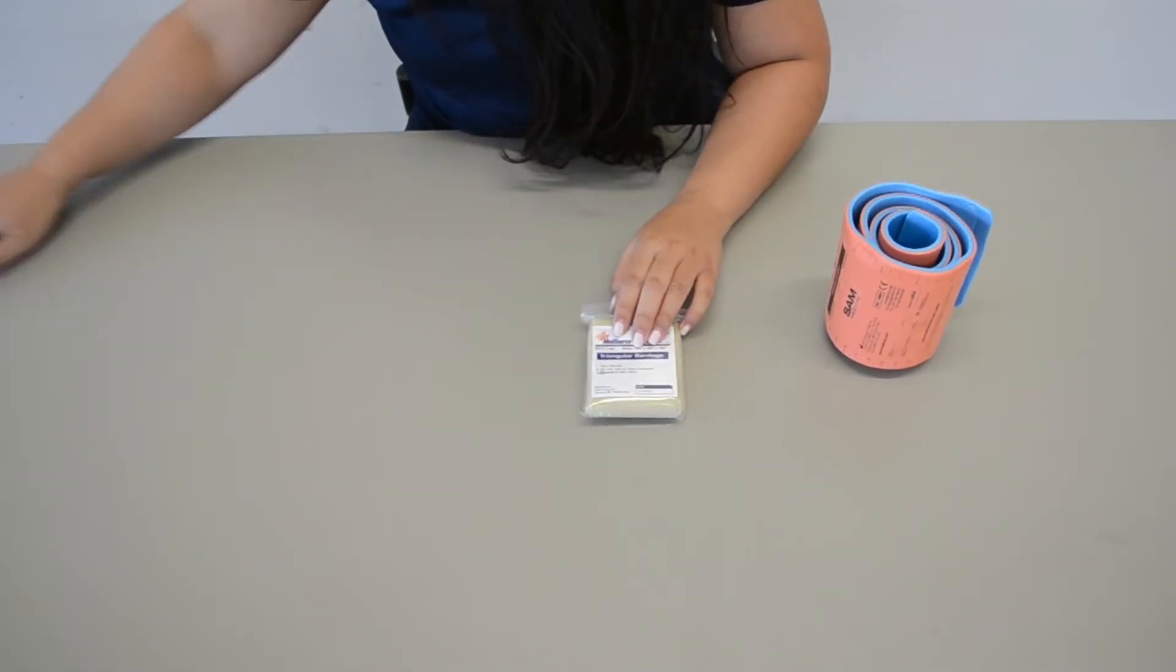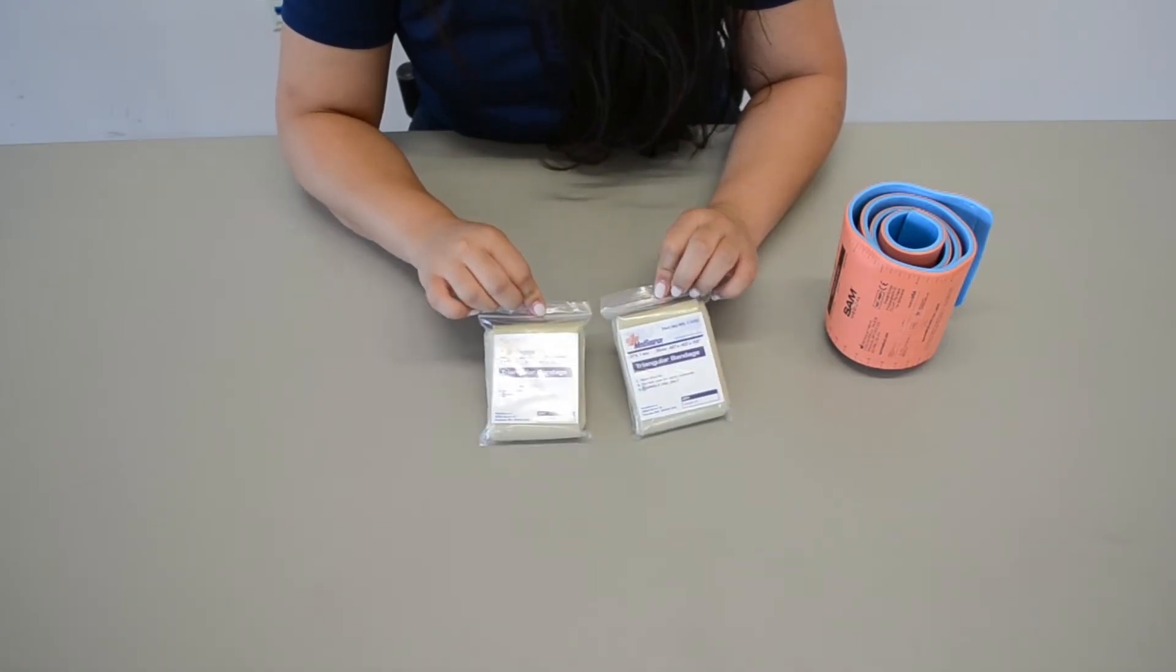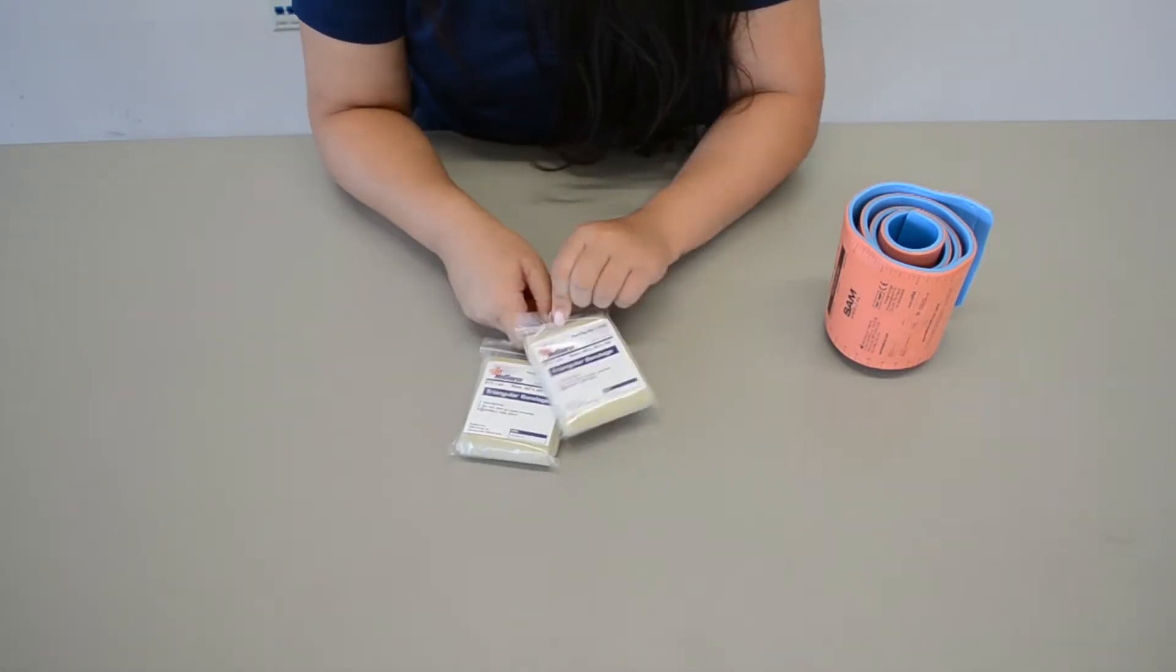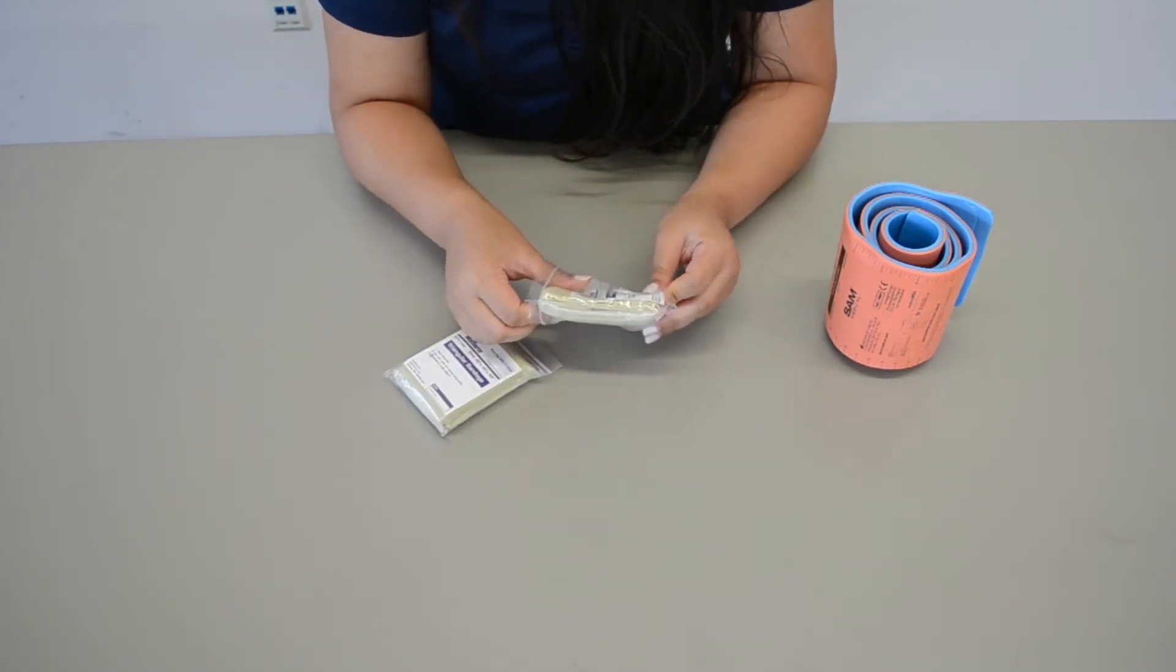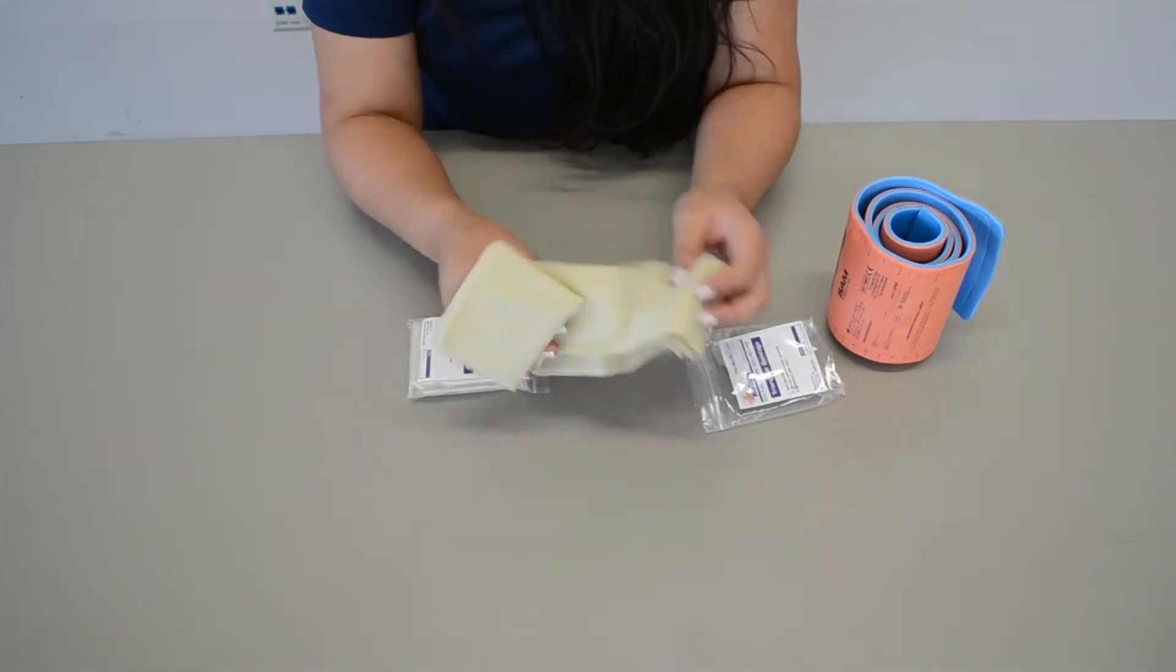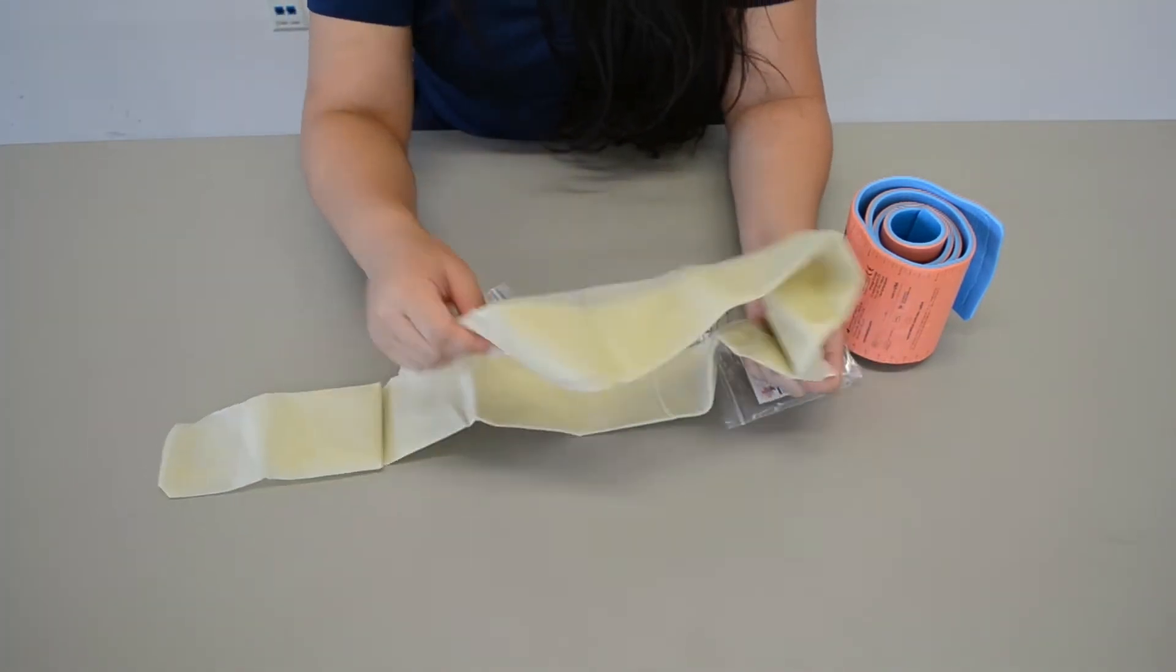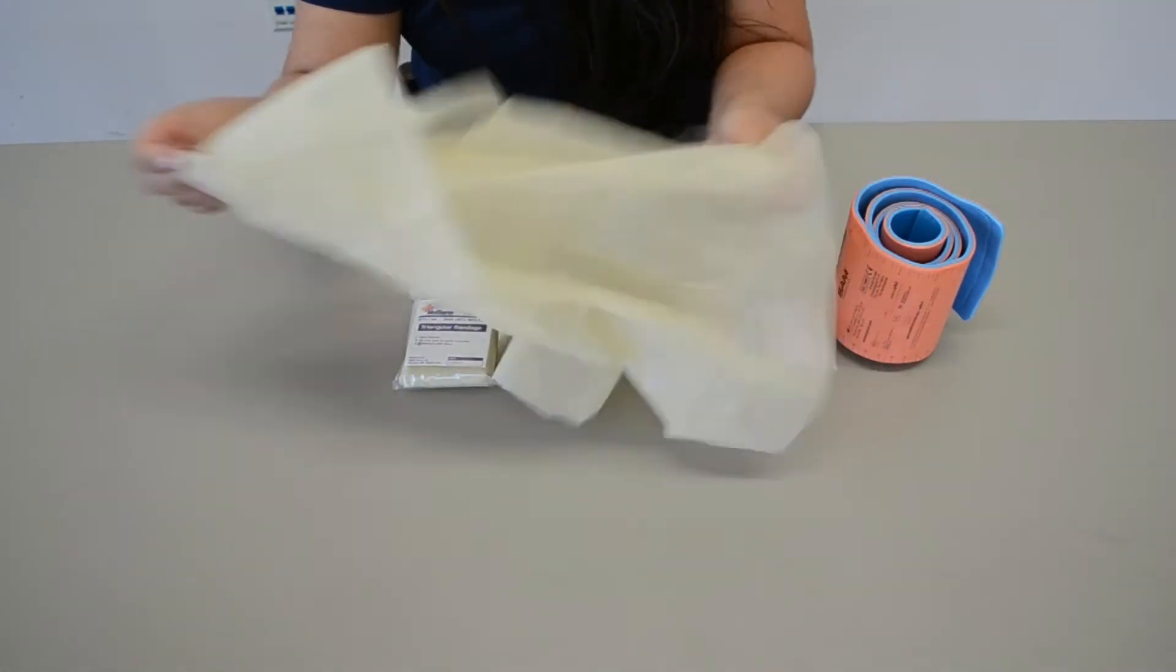And as for our triangle bandages, this is going to be something you use for when a patient has a shoulder injury. So they're going to come in packs like this. They're going to unravel, and there's some safety pins in there. So what you're going to do is you're going to open it up like so.